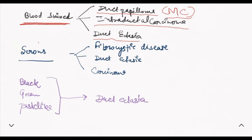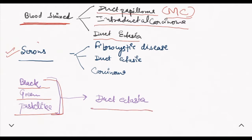Serous discharge is due to fibrocystic disease. We will discuss fibrocystic disease, duct ectasia, and carcinoma further. Black, green, and paste-like discharge from the nipple is due to duct ectasia. The most common cause of blood-stained discharge is duct papilloma.